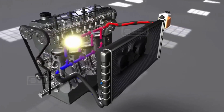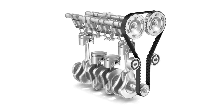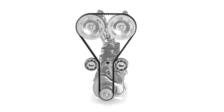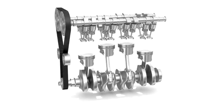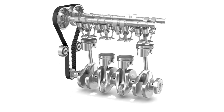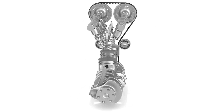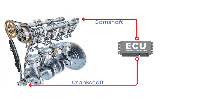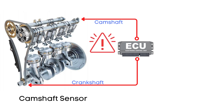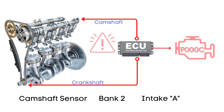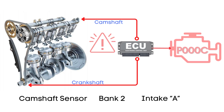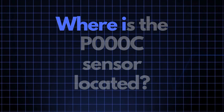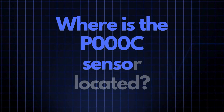The camshaft is rotated by the crankshaft through a timing belt or chain, so both the camshaft and crankshaft need to stay in perfect sync for the engine to run smoothly. The ECU regularly monitors the position of both the crankshaft and camshaft sensors. If it detects that the camshaft sensor for the bank 2 intake camshaft is out of alignment with the crankshaft, it triggers the P000C code to alert you of the issue.